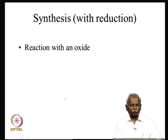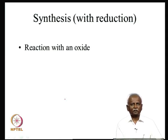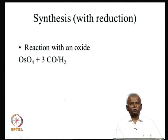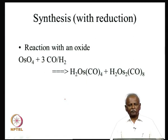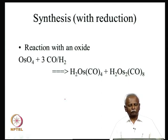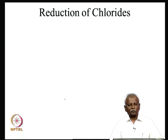Hydrogen can also reduce oxides. To form pure metals from ores, hydrogen gas is often used. For example, osmium tetroxide can be reduced with CO and hydrogen to generate hydrido osmium carbonyl complexes — both dinuclear and mononuclear species can be formed as a result of this reduction reaction.